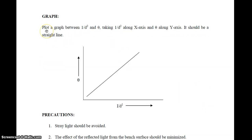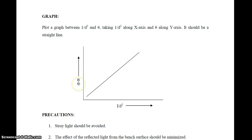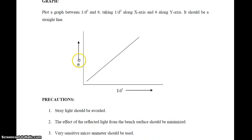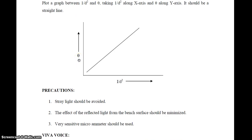Plot a graph between 1/d² on the X-axis and θ (deflection) on the Y-axis, where E = I/d². This graph should be a straight line, verifying the inverse square law. Precautions: stray light should be avoided, the effect of reflected light from the bench surface should be minimized, and a very sensitive microammeter should be used.